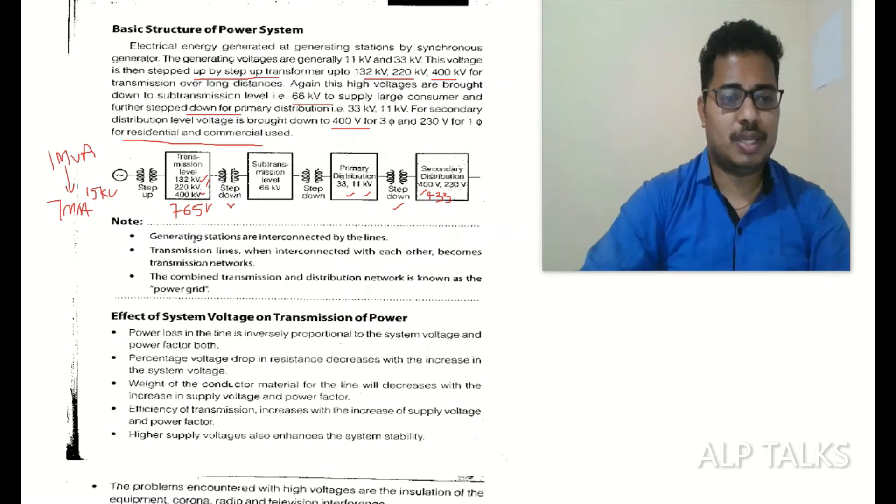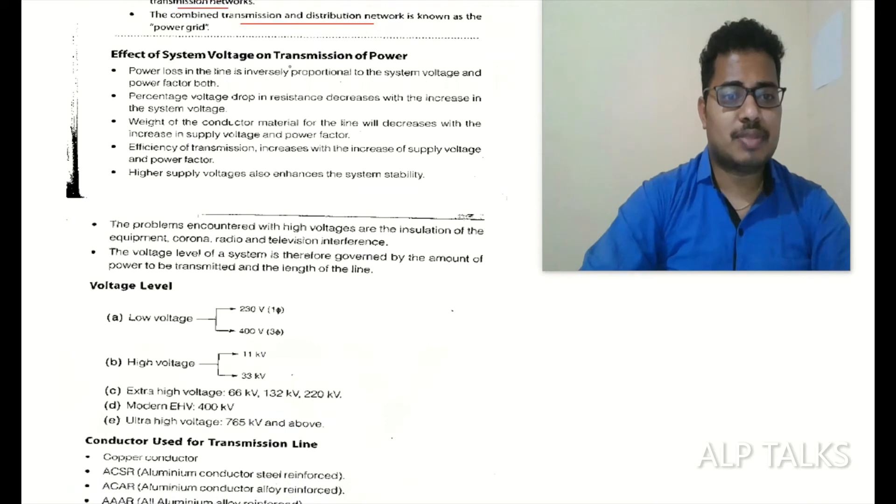Generating stations are interconnected by transmission lines. When interconnected with each other, it becomes a transmission network. The combined transmission and distribution network is known as power grid. Effect of system voltage on transmission of power: power loss in line is inversely proportional to system voltage and power factor both.